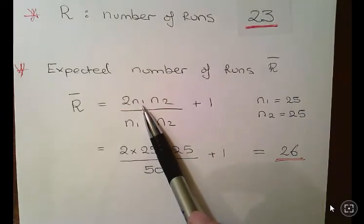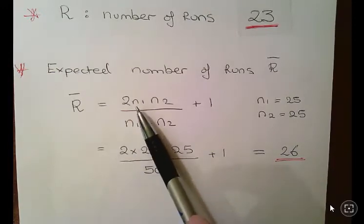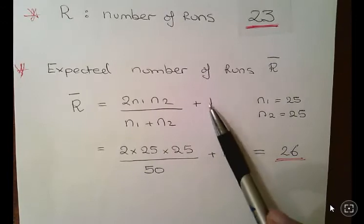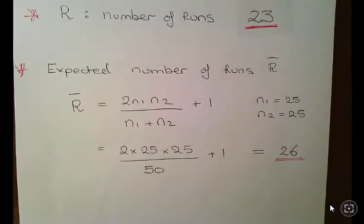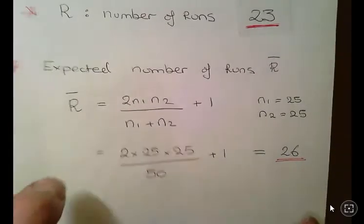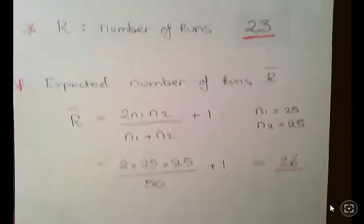2 times 25 times 25 over 25 plus 25 plus one. So the expected number of runs in this scenario is 26. So 23 and 26, not a massive fluctuation, so you can sort of already get a sense of where this is going.